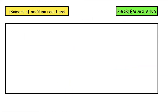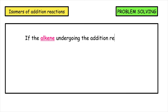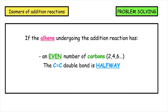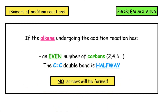If the alkene undergoing the addition reaction has an even number of carbons — two, four, six, etc. — and the carbon-to-carbon double bond is halfway between the even number of carbon atoms, no isomers will be formed.